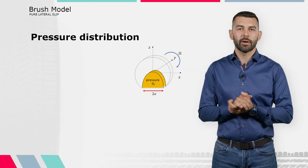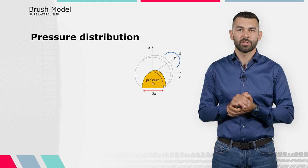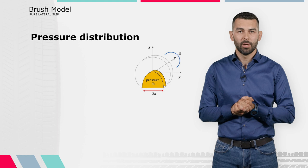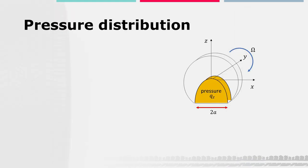We assume here a parabolic pressure distribution, which is symmetric with respect to the contact patch around the z-axis, uniform along the y-axis. We call Qz the pressure per unit width.